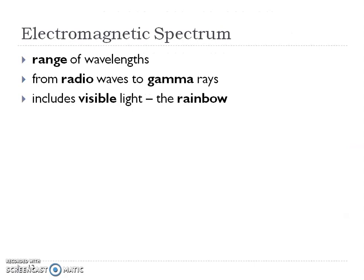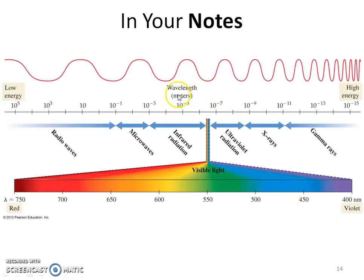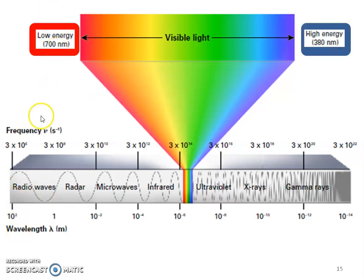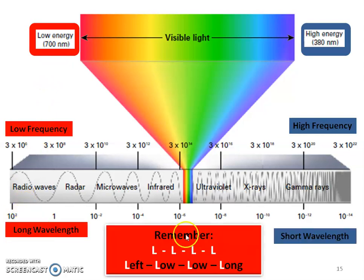What is the electromagnetic spectrum? It gives us a wide range of wavelengths and frequencies, going from radio to gamma. You've heard of radio waves and maybe gamma rays, and it includes visible light — the rainbow we can see. From left to right we go from low to high frequency. I like to remember this by the Ls: the left side has low energy, low frequency, and long wavelength.